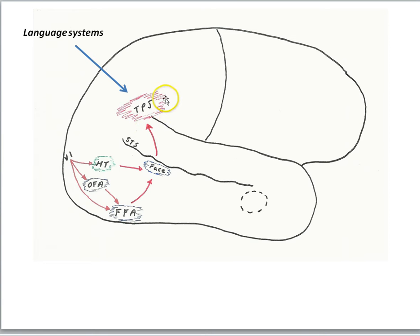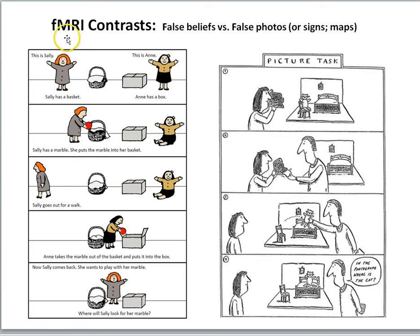Let's get to some of the fMRI studies that reveal the TPJ as a region specialized for thinking about another person's thoughts. When doing fMRI studies, you need a contrast — you have to use the subtraction method. You'll have a target stimulation, the scenario you're really interested in, and then subtract all brain activity not related to the processing of interest. So you need a control task. If we use the false belief task as our target condition, we need to subtract brain activity not really related to processing someone's thoughts.